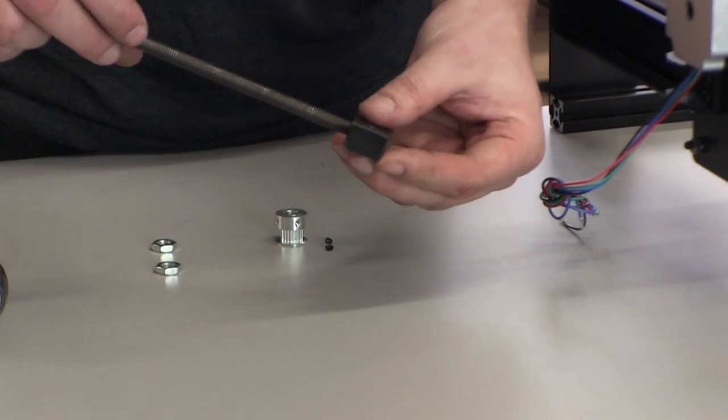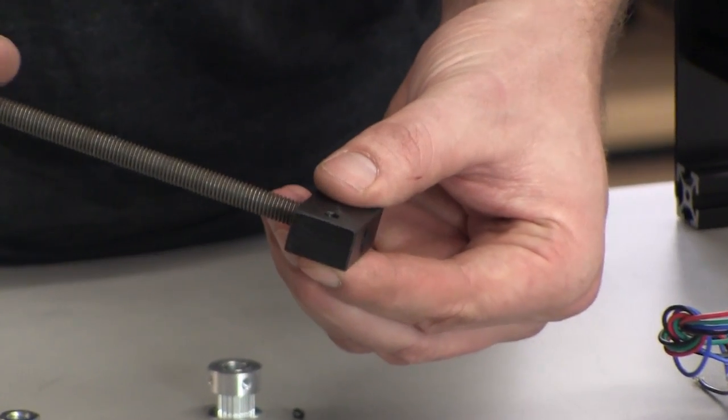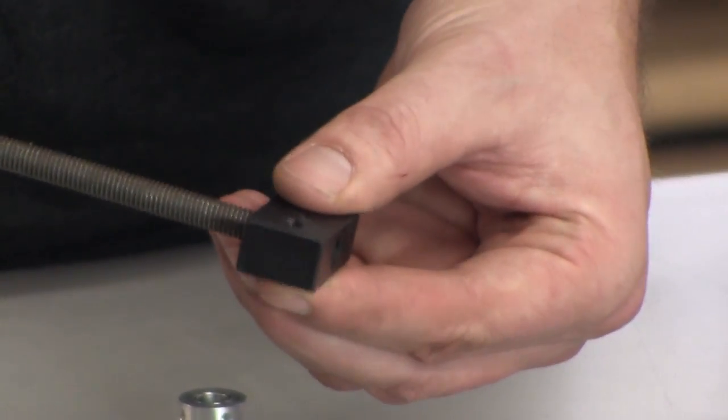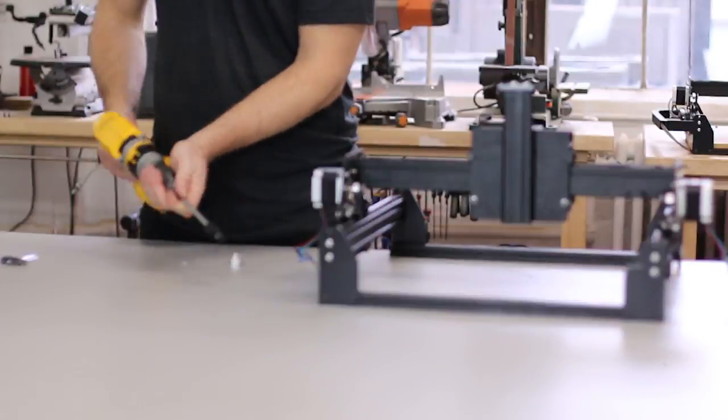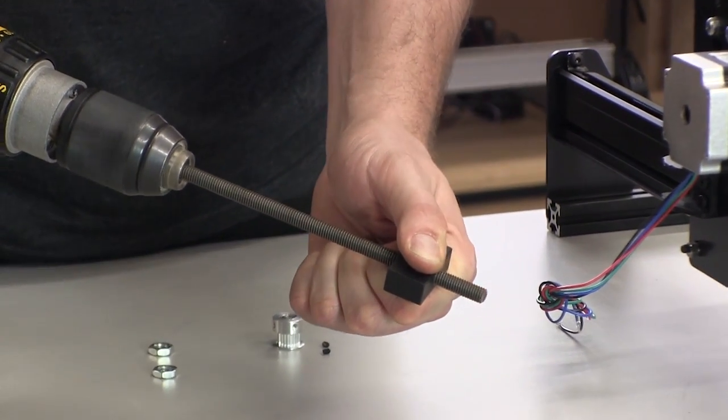Now we'll assemble the threaded rod portion of the X-Carve. The first thing you'll do is hand thread the Delrin nut onto the threaded rod. You'll want to bring the Delrin nut up and down the entire length of the threaded rod a few times to loosen up the nut.